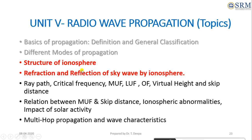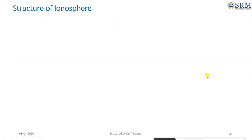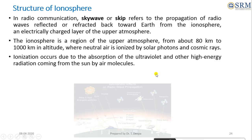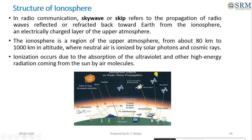Today's class covers the structure of the ionosphere and the refraction and reflection of sky waves by the ionosphere. As discussed earlier in sky wave propagation, the radio waves are refracted or reflected by the ionosphere. The ionosphere is a region of the upper atmosphere from about 80 kilometers to 1000 kilometers in altitude, where neutral air is ionized by solar photons and cosmic rays.